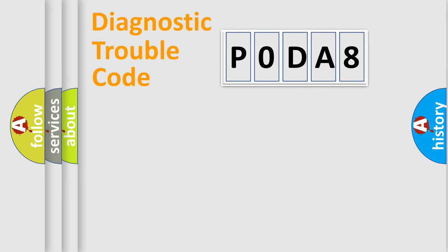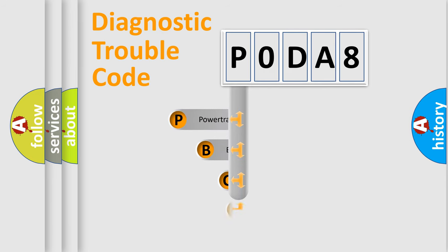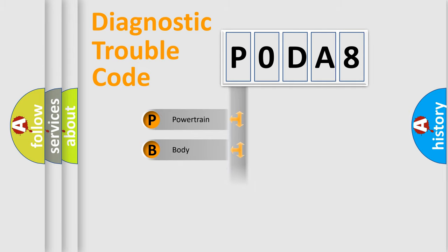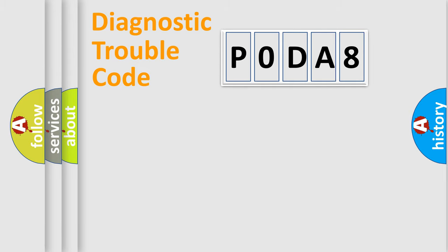First, let's look at the history of diagnostic fault code composition according to the OBD2 protocol, which is unified for all automakers since 2000. We divide the electric system of an automobile into four basic units: Powertrain, Body, Chassis, and Network. This distribution is defined in the first character of the code.